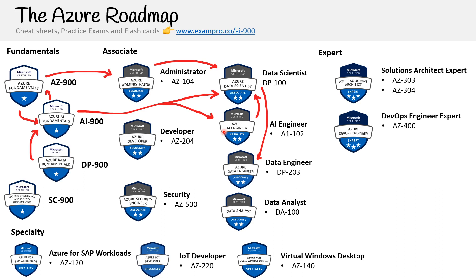The data scientist path is definitely harder than the AI engineer. The code was recently updated, so I updated that to 102. The AI engineer used to require two separate courses, but now it's just a single unified one.